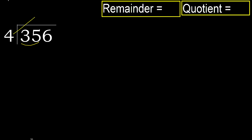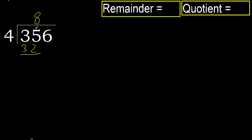4 multiplied by which number is nearest to 35 but not greater? 4 multiplied by 9 is 36, which is greater. 4 multiplied by 8 is 32, which is not greater. Subtract: 35 minus 32 equals 3.